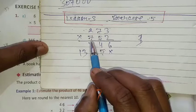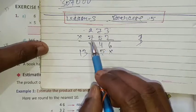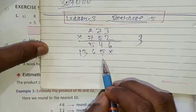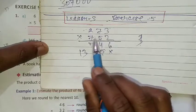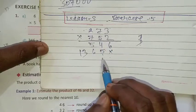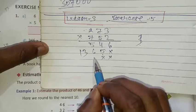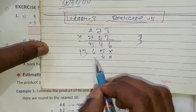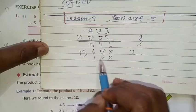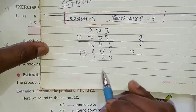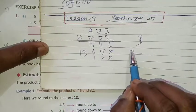Now 7 multiplication. So 7 into 3 is 21. We are multiplying the third time, so we leave 2 places, it will come here. 7 into 3 is 21, 1 here, 2 carry. 7 into 7 is 49, 49, 50, 51.